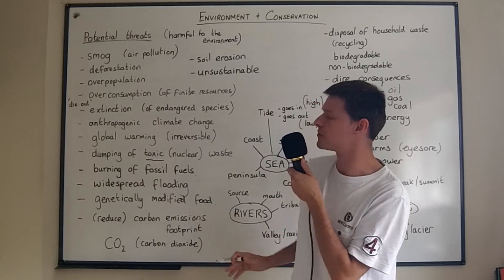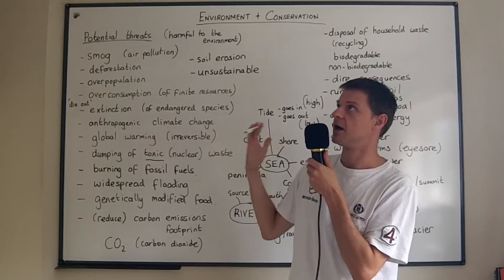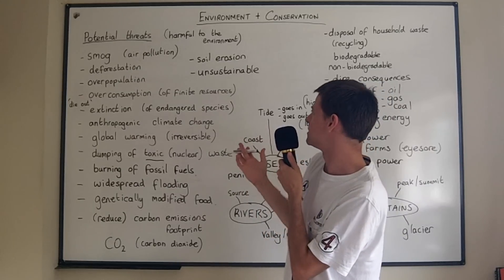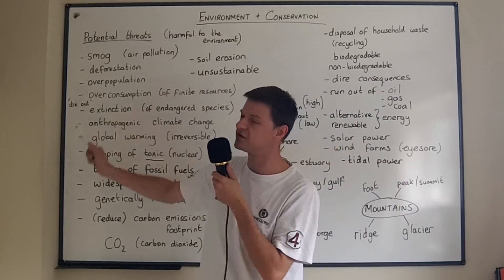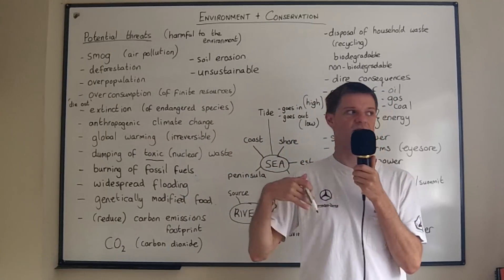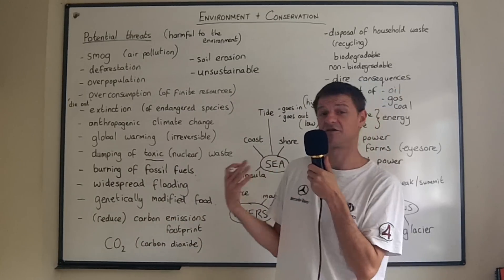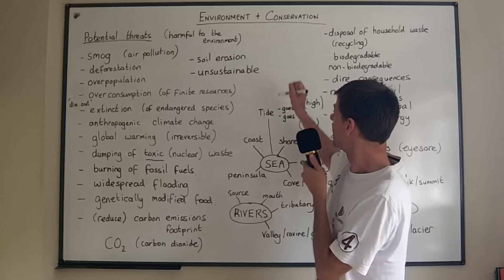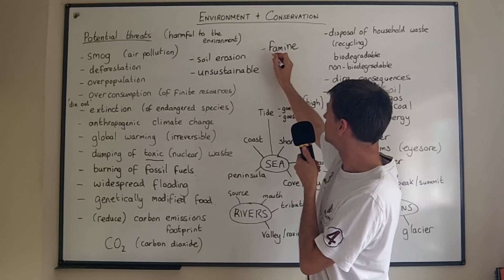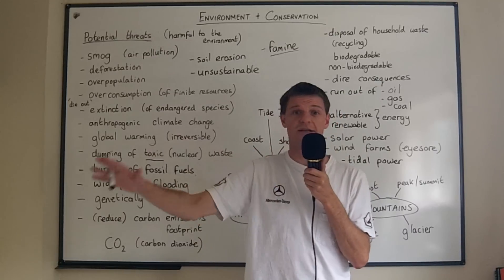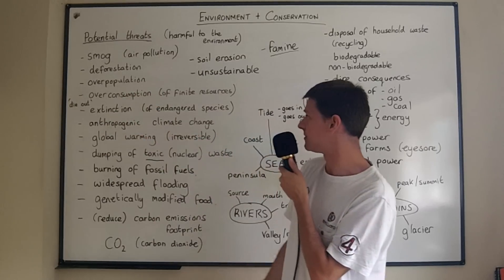Overpopulation is another potential threat people often speak about. They speak about the population growing to such a large degree that things become unsustainable. People over-consume finite resources — too much oil, too much gas, or perhaps just too much food. One result of this could be famine, which means widespread hunger — when there's not enough food in one area. That could be a consequence of overpopulation or overconsumption.